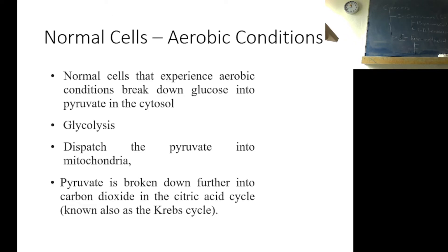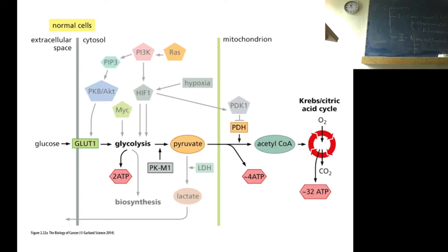Normal cells under aerobic conditions: Normal cells that experience aerobic conditions break down glucose into pyruvates in the cytosol, which is done by glycolytic pathway, glycolysis. And then normal cells dispatch the pyruvates into mitochondria. In the mitochondria, pyruvate is broken down further into carbon dioxide with citric acid cycle or TCA cycle or Krebs cycle. And then normal cells produce 36 ATP from one glucose.